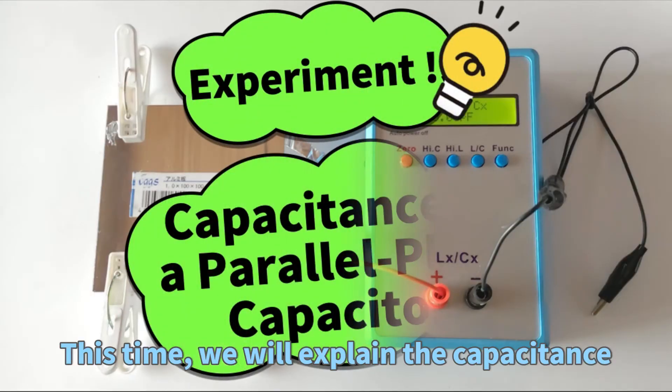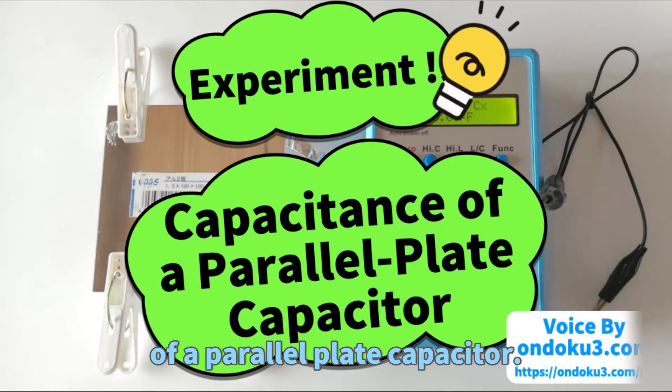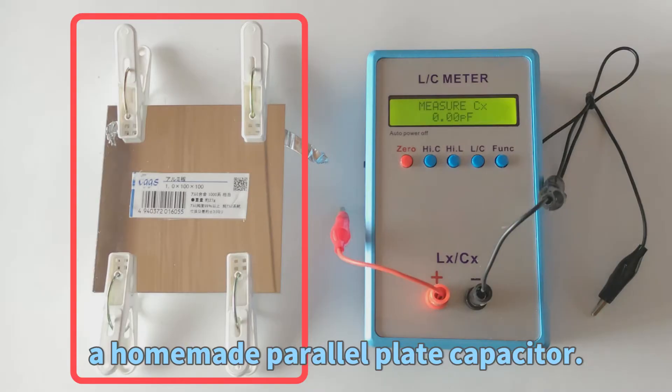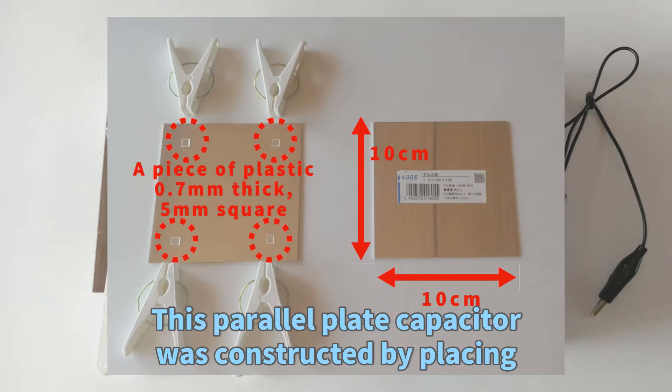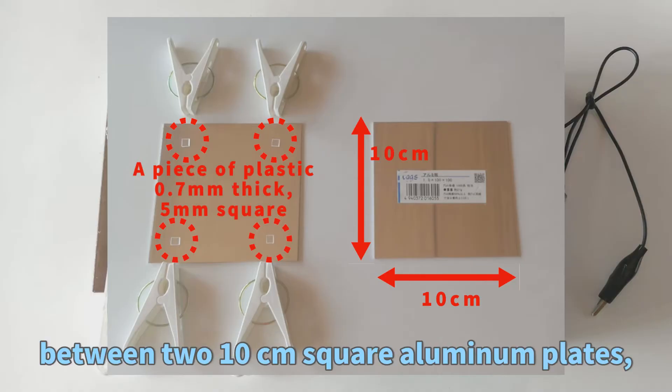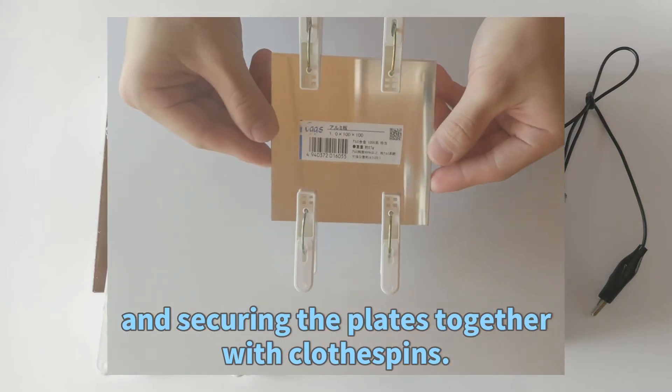This time we will explain the capacitance of a parallel plate capacitor. On the left side of the screen, you can see a homemade parallel plate capacitor. This capacitor was constructed by placing 0.7 millimeter thick pieces of plastic at the four corners between two 10 centimeter square aluminum plates and securing the plates together with clothespins.